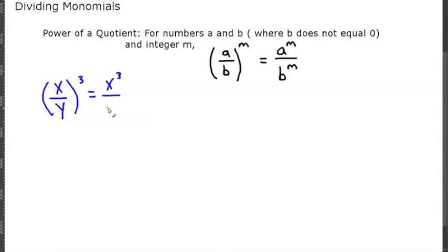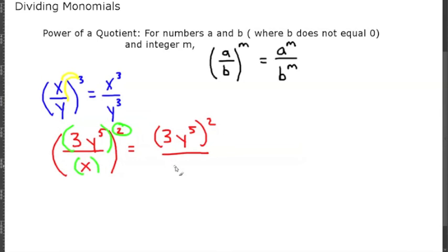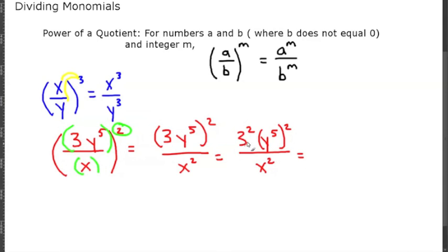If I give you x over y to the third, that would simply be x to the third over y to the third. For the example 3y to the fifth over x squared, raised to the 2nd power, the 2 gets distributed to both the top and bottom terms, giving us 3y to the fifth quantity squared over x squared. That becomes 3 squared times y to the fifth squared over x squared, where 3 squared is 9 and y to the fifth squared is y to the tenth.